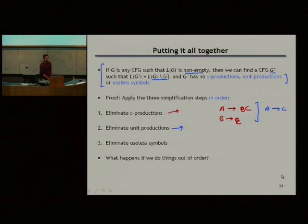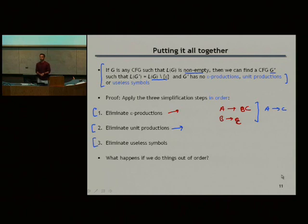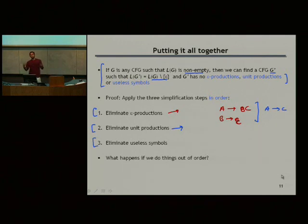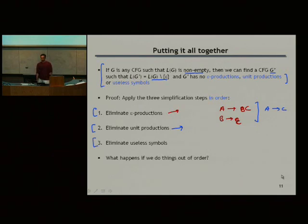At each of these steps you have to convince yourself that the language is the same. We only did one of the proofs, but basically it's the same idea: at every step, what you have done has given you a grammar that you can simulate in both directions — what the old grammar could do you can do with the new grammar, and vice versa. This gives us grammars that have these nice properties.